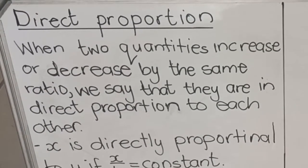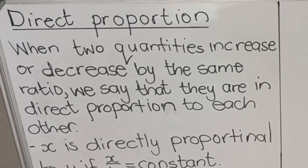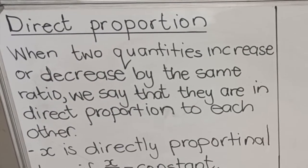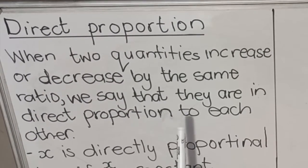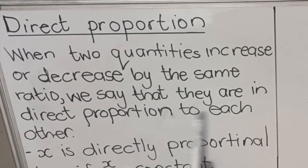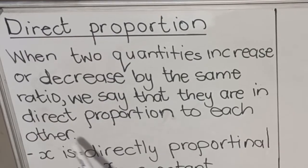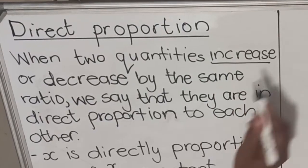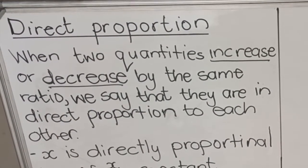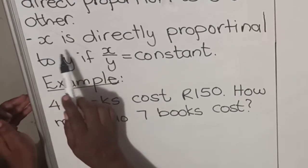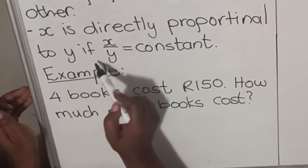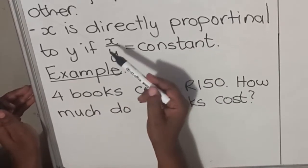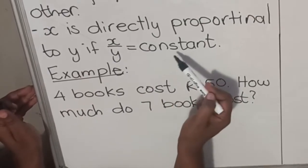In this video we are going to look at direct proportion and indirect proportion, also known as inverse proportion. We're going to start with direct proportion. The definition is: when two quantities increase or decrease by the same ratio, we say that they are in direct proportion to each other. X is directly proportional to y if x divided by y is equal to a constant.